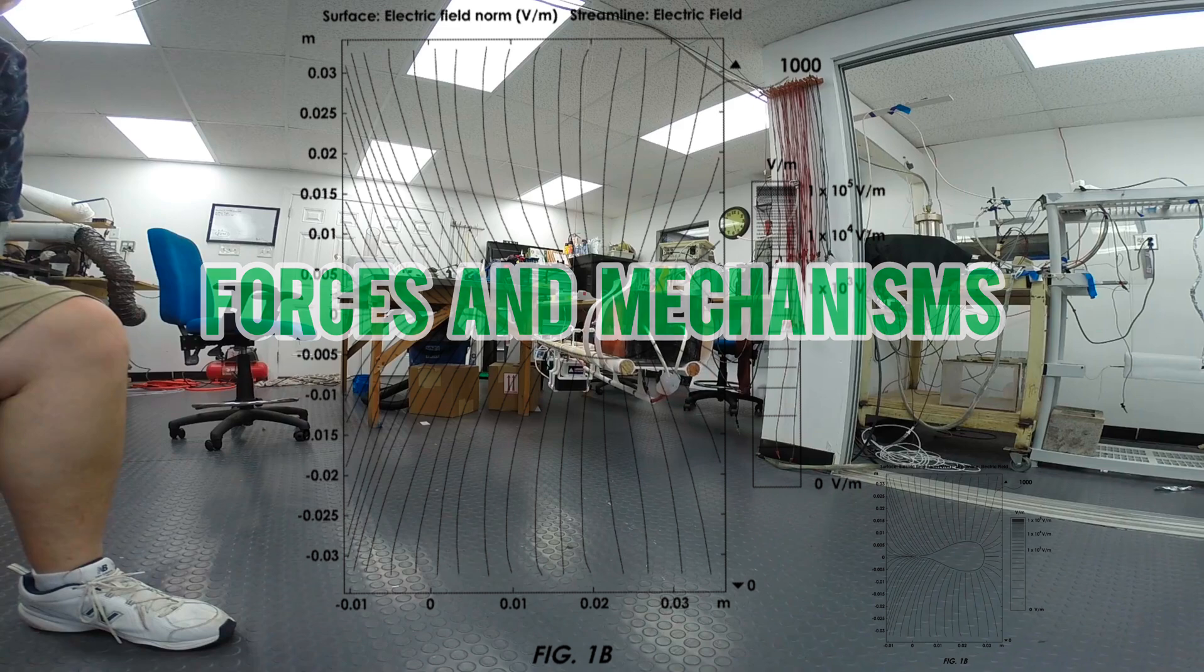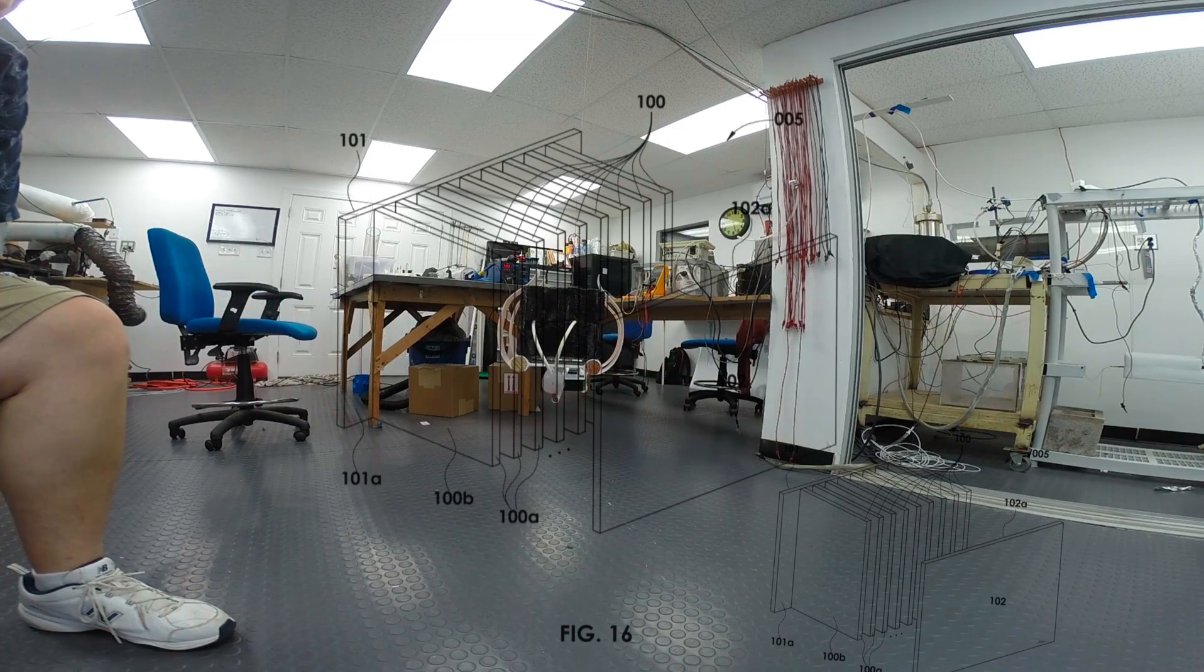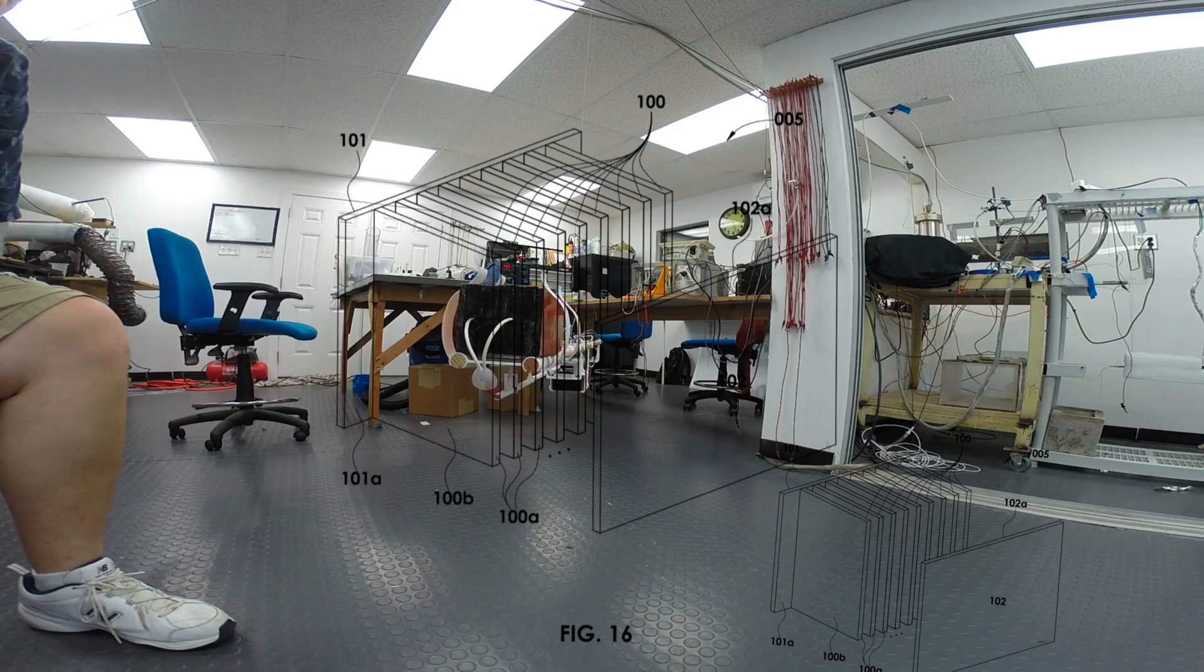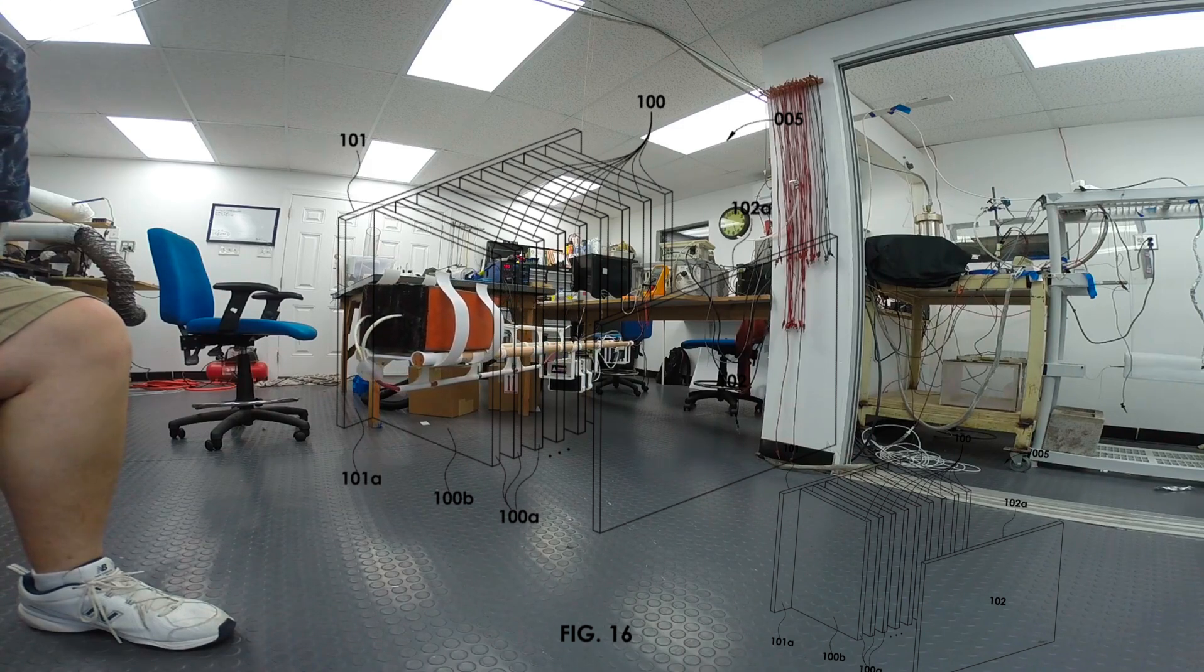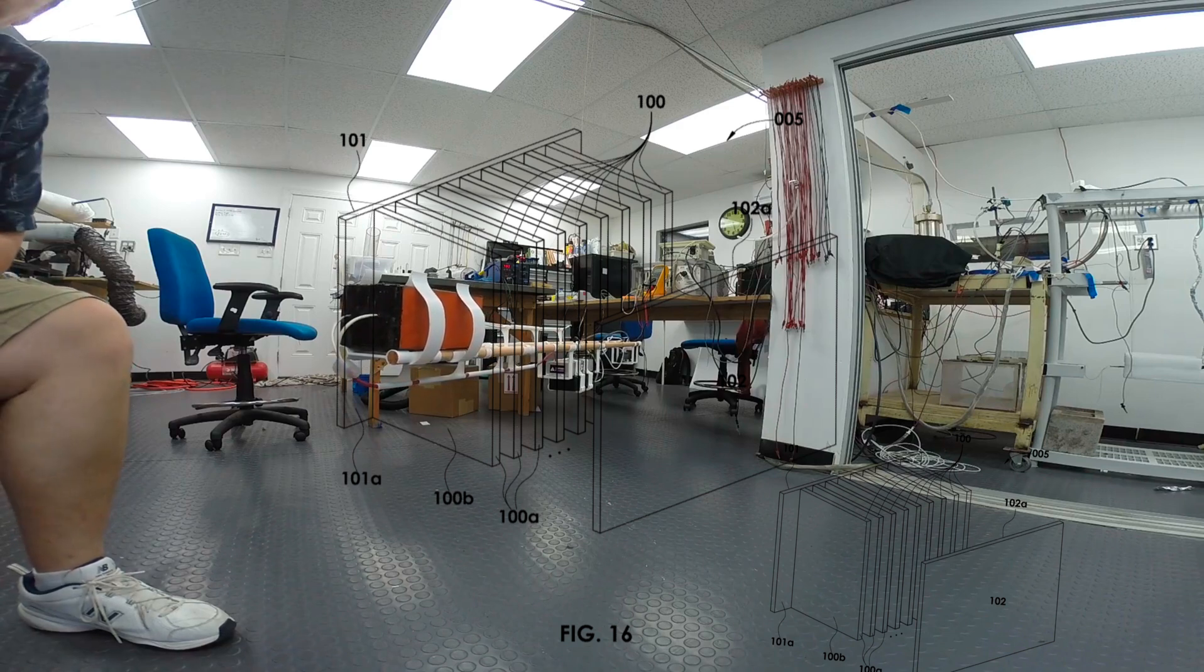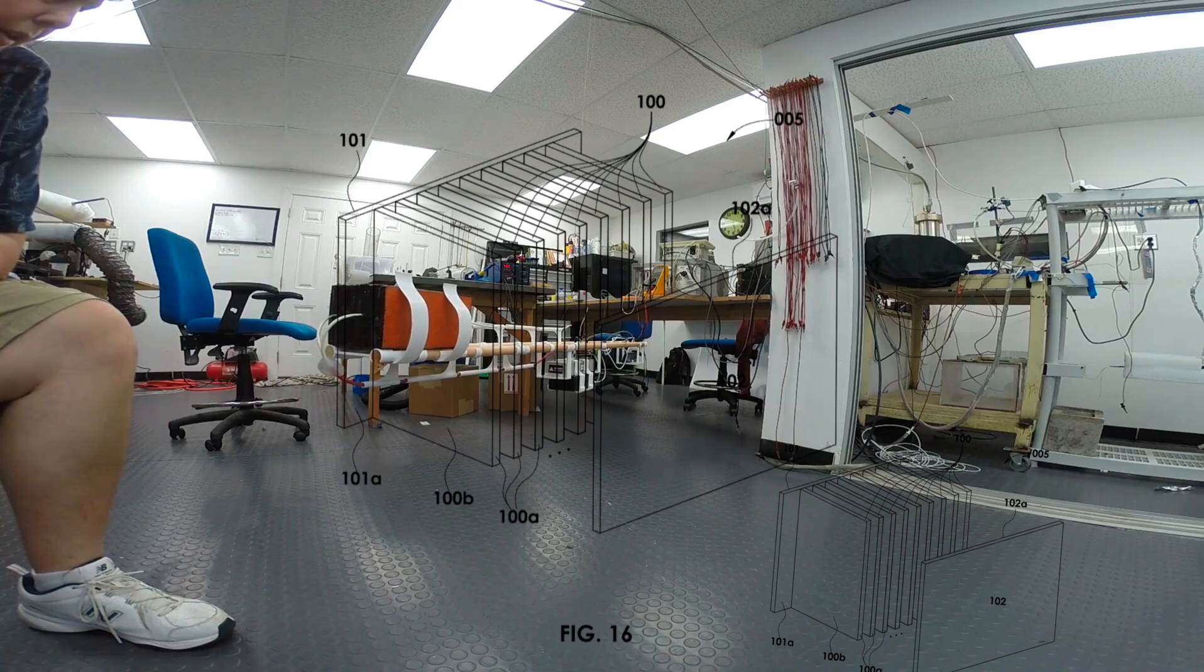The underlying mechanism for these propellantless systems often involves manipulating electrostatic fields. Bula's device, for instance, uses asymmetrical capacitors and plates to create a divergent electrostatic field, which generates a net force. This force arises from an imbalance in electrostatic pressure, pushing the system in a specific direction.